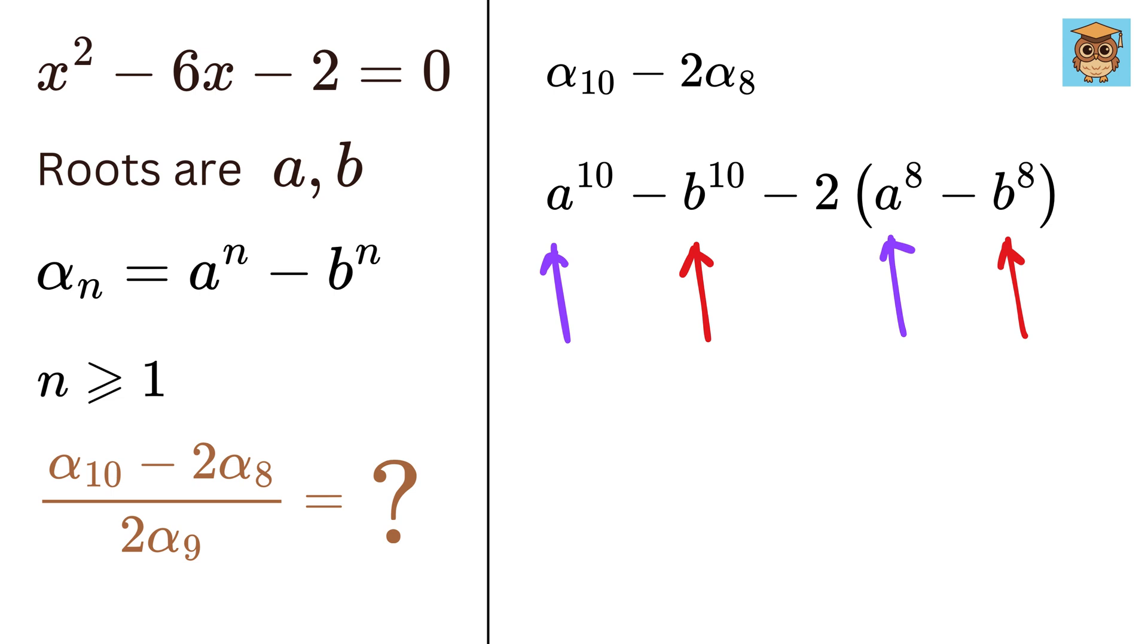So we can rewrite this as a^10 - 2a^8 - b^10 + 2b^8.